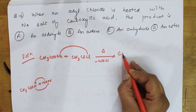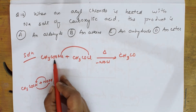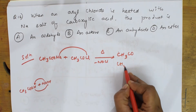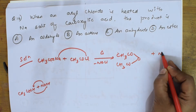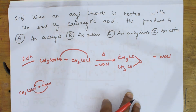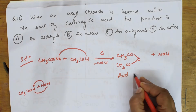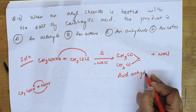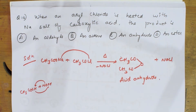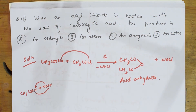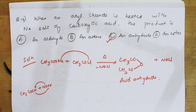Joining these two, we get CH₃CO here and CO here — CH₃CO on both sides, both linked with oxygen, plus NaCl. So what is this? This is nothing but acetic anhydride, or acid anhydride. This is called acid anhydride.